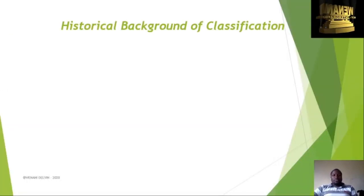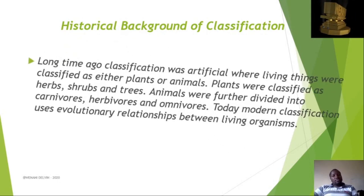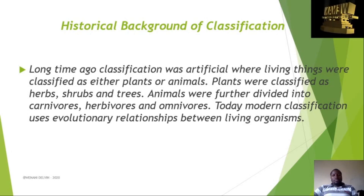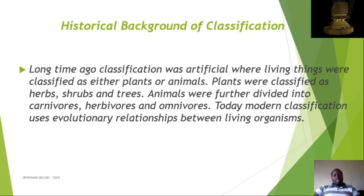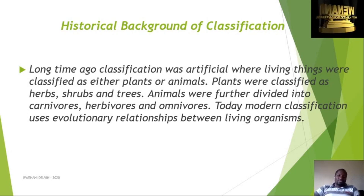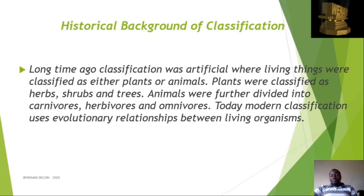Let me go through some historical background of classification. Classification has grown over time. A long time ago, classification was very artificial — living organisms were classified as either plants or animals. Plants were either herbs, shrubs, or trees. Animals were either carnivores, herbivores, or omnivores, depending on what they feed on. Today, modern classification also uses evolutionary relationships.